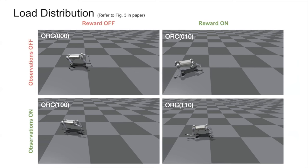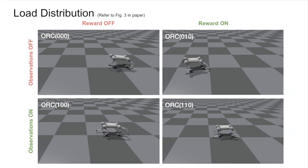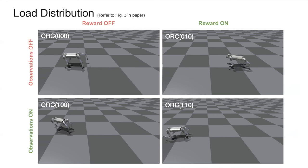For ORG configurations without both observations and rewards, they tended to converge inconsistently to two or three-legged gaits, while ORC11x consistently used all legs in a balanced way.